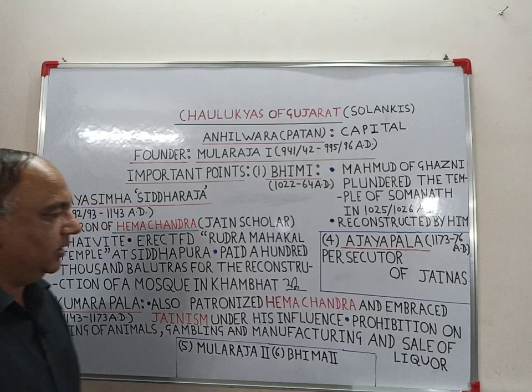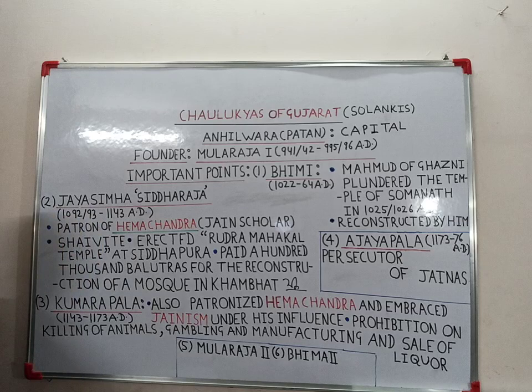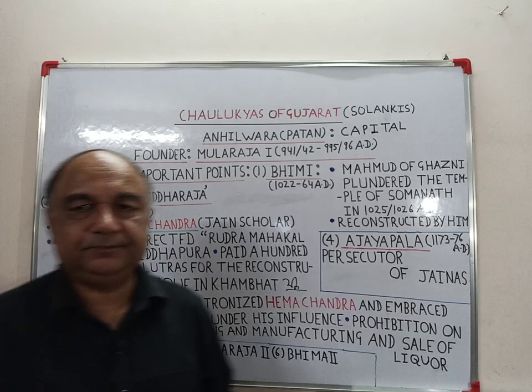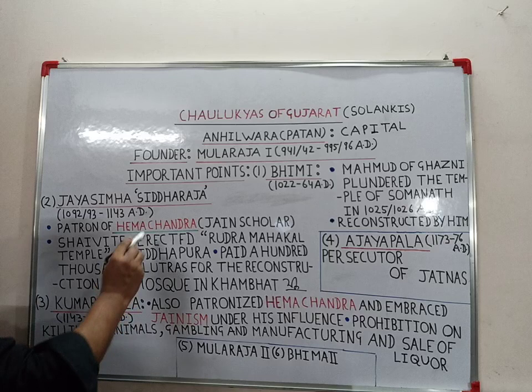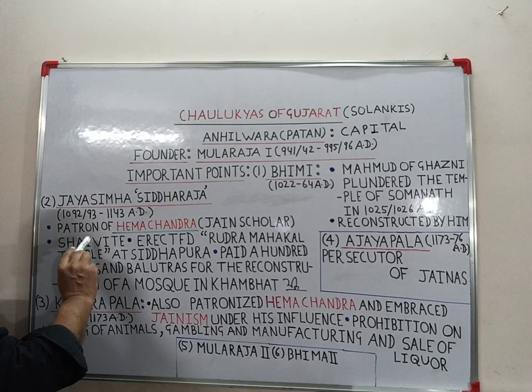The next ruler is Jaisingh Siddharaj. Jaisingh Siddharaj and Kumar Pali are the great rulers of this dynasty. Siddharaj was his title.